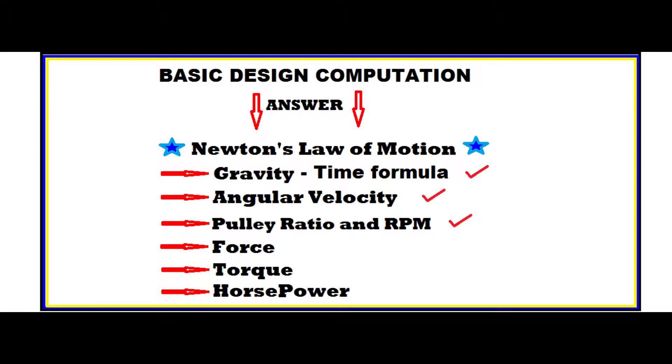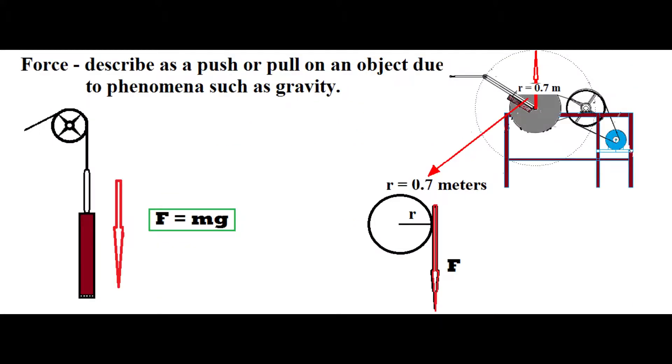So in the checklist, we already finished three topics. Next, the force. So the force describes the push or pull of an object due to phenomenon such as gravity. So the formula is: force equals mass times the gravity, so 35 kg times 9.8 meters per second squared equals 343 newton.